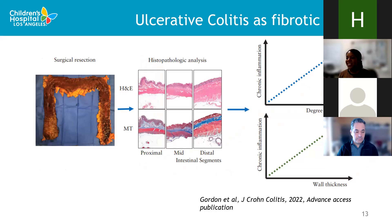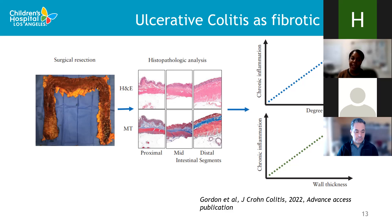Does fibrosis apply to ulcerative colitis? When I started training, we thought of UC as a purely mucosal disease, but this thinking is changing. Beautiful work from the Cleveland Clinic showed that patients with ongoing chronic inflammation had fibrosis and thickened bowel wall in the colon. This fibrotic complication affects motility, causes symptoms, and makes patients uncomfortable. Therefore, aggressive treatment of ulcerative colitis is also warranted to prevent fibrosis.